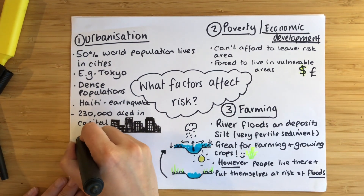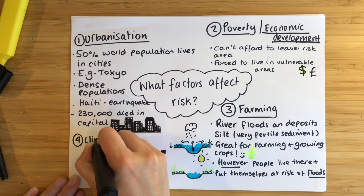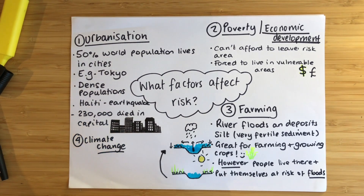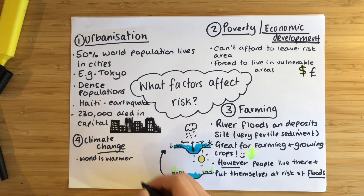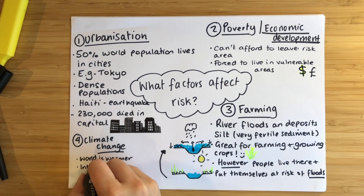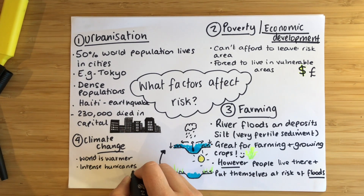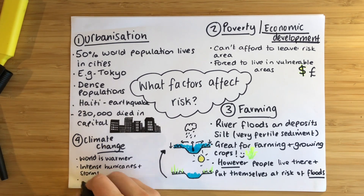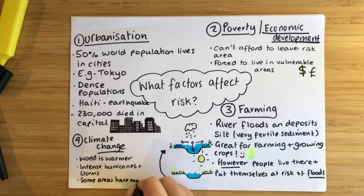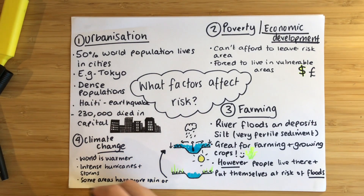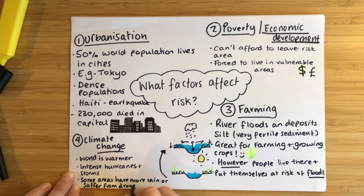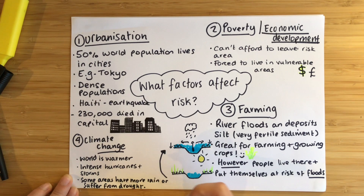The final factor affecting the risk of natural hazards is climate change. The world is getting warmer, which leads to more intense and frequent hurricanes and storms because of that increased energy. Some parts of the world are becoming wetter, increasing flood risk, while other areas will have less rainfall and will be prone to droughts, wildfires, and other natural events.